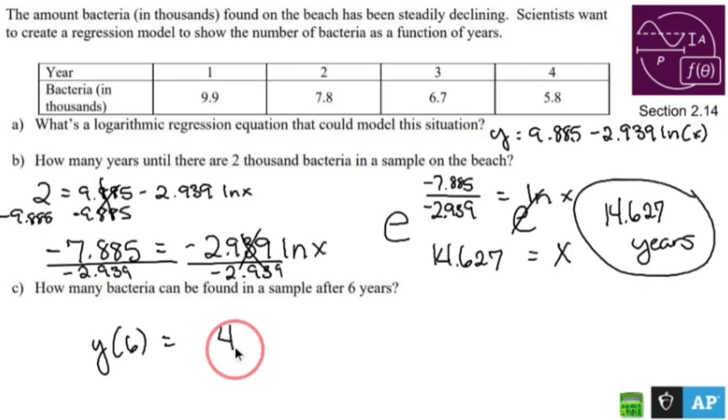And you get 4.619. This of course is in thousands. So we'll say thousand. It may have been easier if I just wrote out 4,619, but you know what? I'm sticking with the bit.